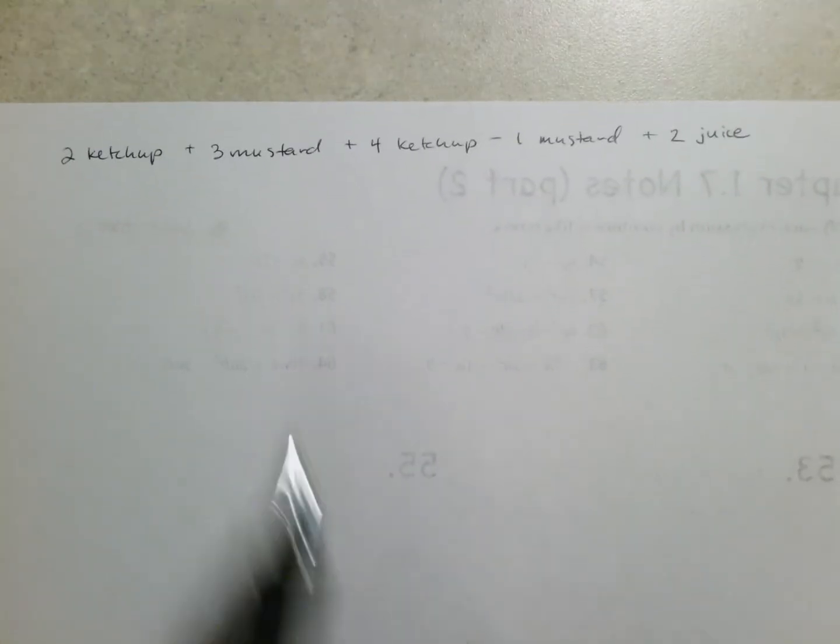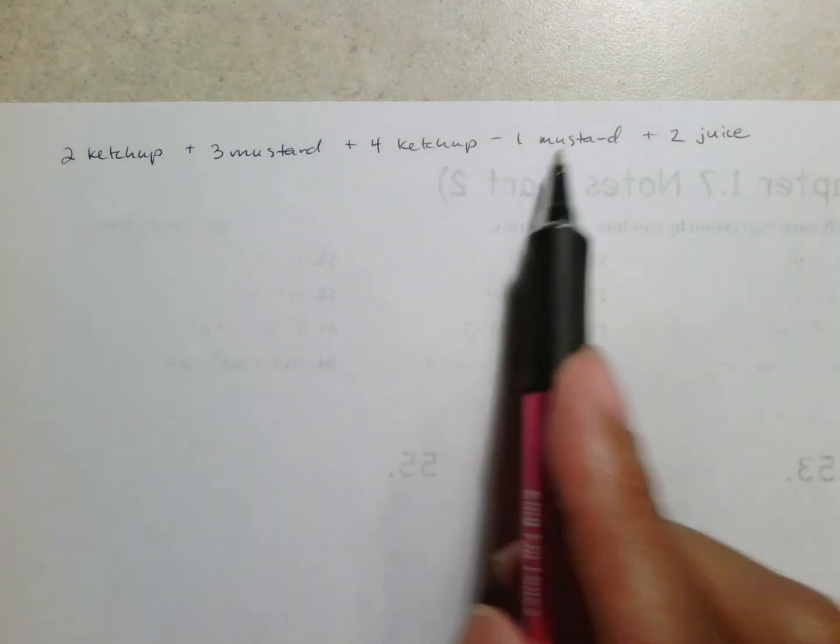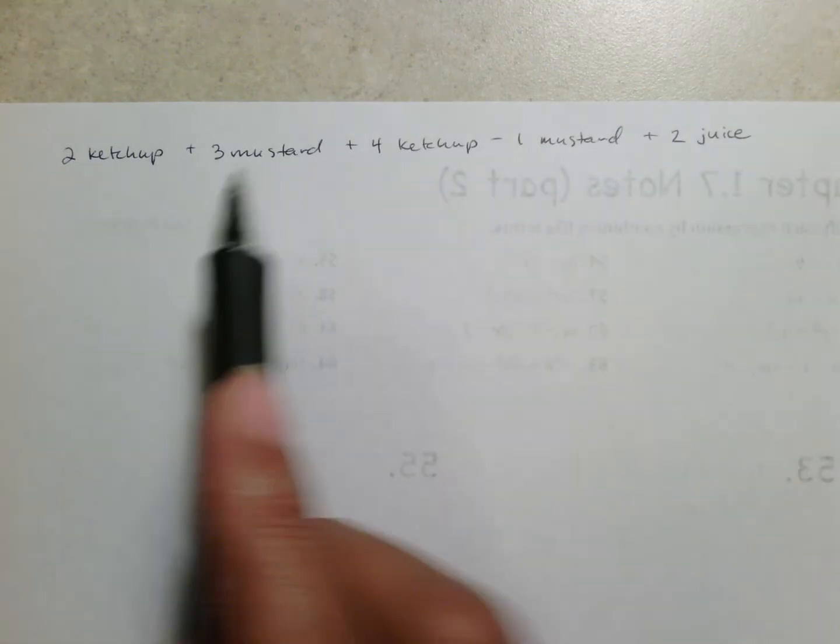Let's imagine for example that you are working at a store and your job is to organize the shelf. And so you have two ketchups, you have three mustards, four ketchups, one mustard, two juice. And they're all stacked up in this order.